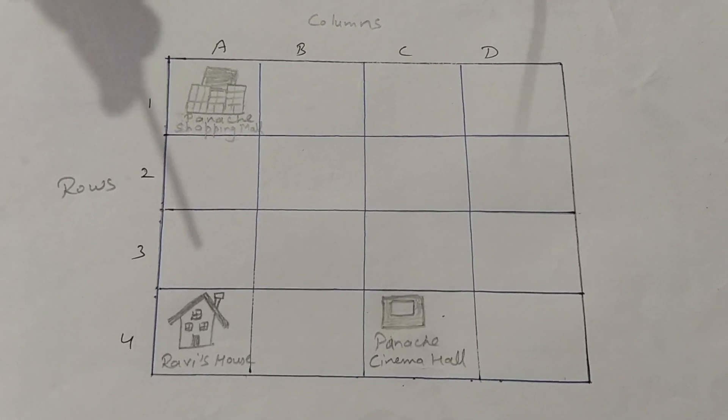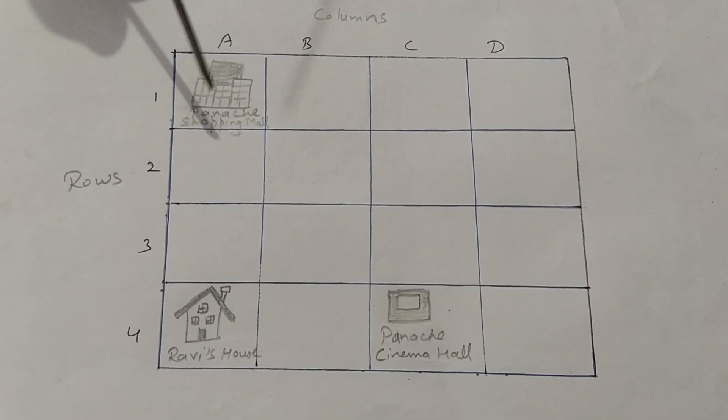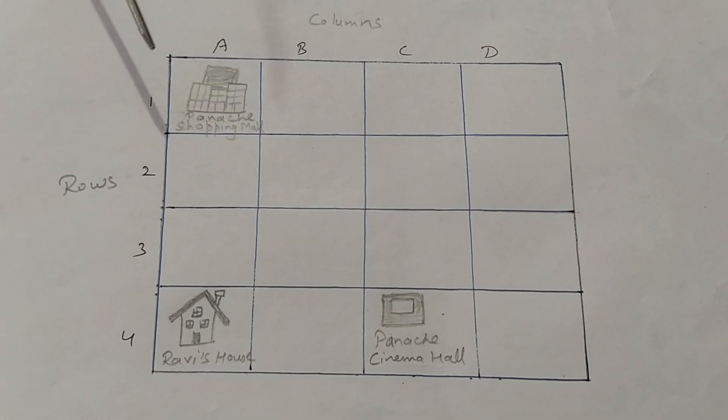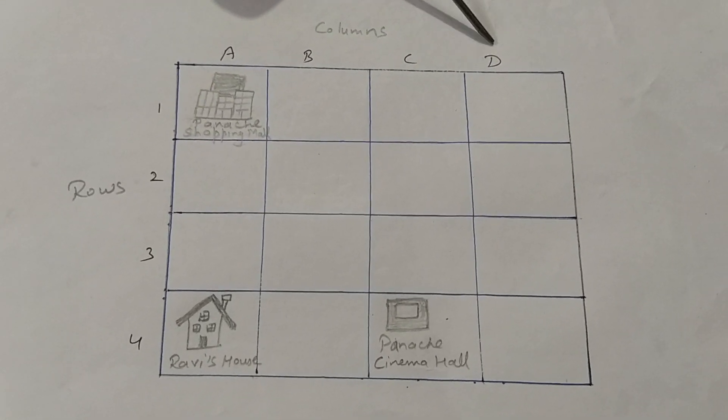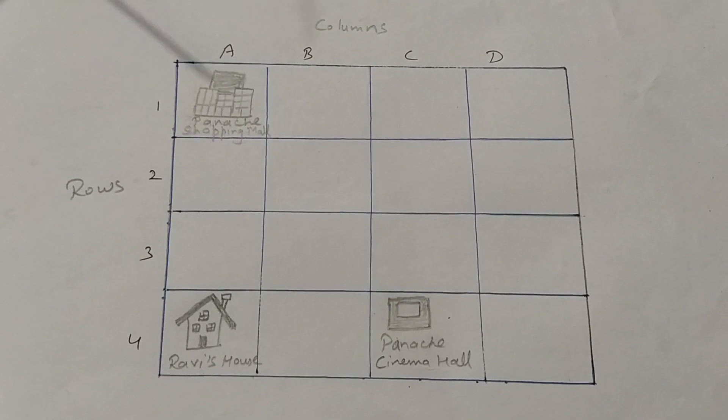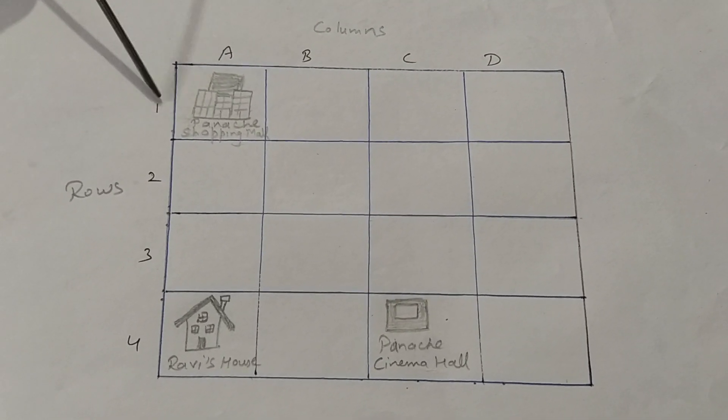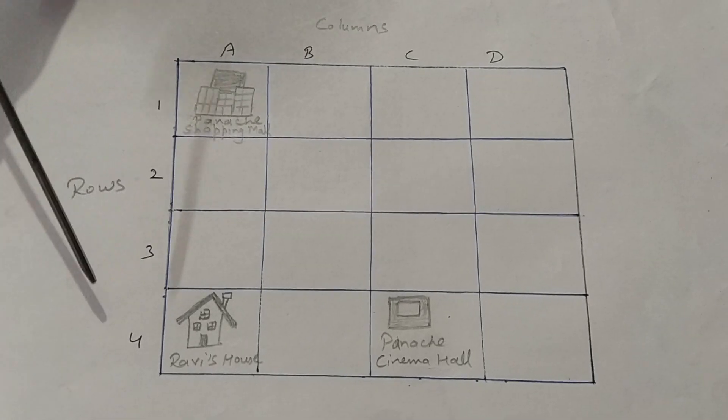Now, understand with an example. You see this map. In this map, columns A, B, C, and D are labeled here on the top. The rows are labeled with 1, 2, 3, and 4.